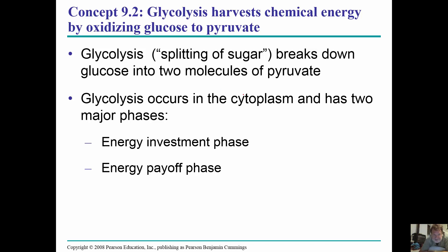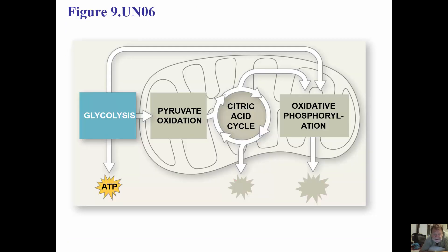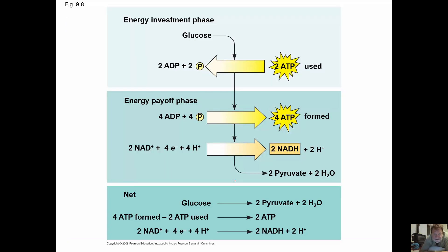Glycolysis literally means splitting of sugar. Glycolysis occurs in the cytoplasm and has two major phases: the energy investment phase and the energy payoff phase. In figure 9.8: we add 2 ATP to glucose and that results in making 2 ATP and 2 NADHs, plus 2 pyruvates and 2 water molecules. Pyruvate is a 3-carbon molecule, so we start with 6 carbons in glucose and end up with two 3-carbon pyruvates.